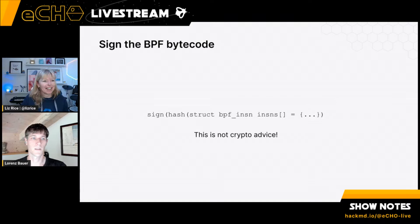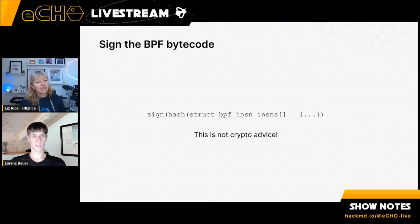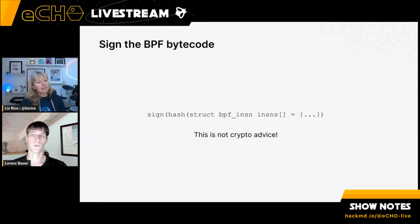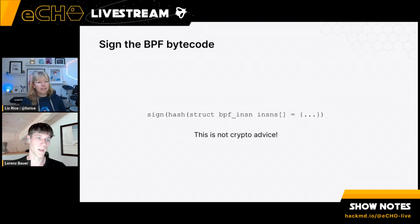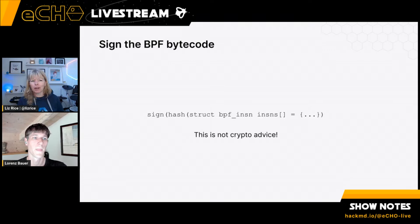The kernel can't tell the difference between code modified legitimately by libBPF and code that's been tampered with maliciously. Part of the proposal would be to move a lot of user-space work into the kernel — CO-RE would have to happen in the kernel. That has implications: it becomes harder to fix when CO-RE goes wrong, since right now you can just update libBPF rather than patching the kernel.